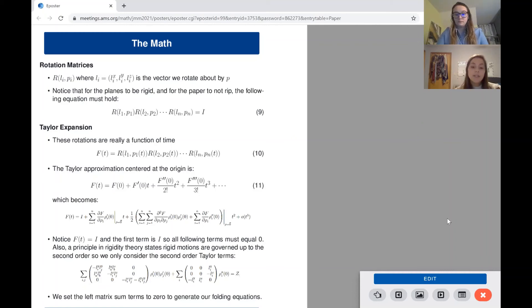Now, by the previously mentioned principle, we focus on the second order term at f double prime 0, and again, we know this must equal 0. Notice that the upper left term of the second order term matrix is the summation of the negative y coordinate of the ith crease times the y coordinate of the jth crease.